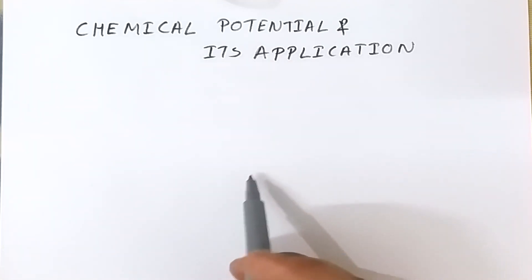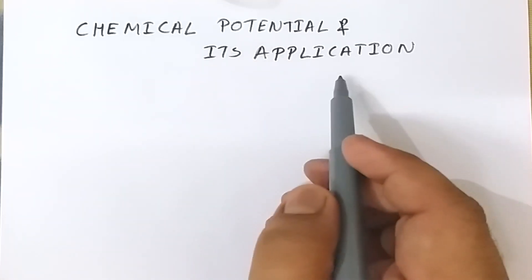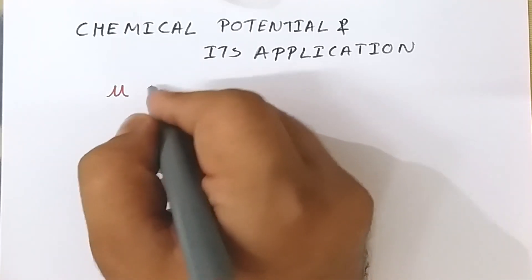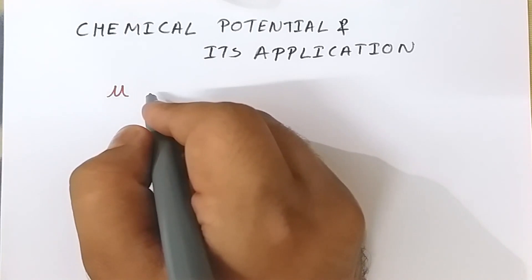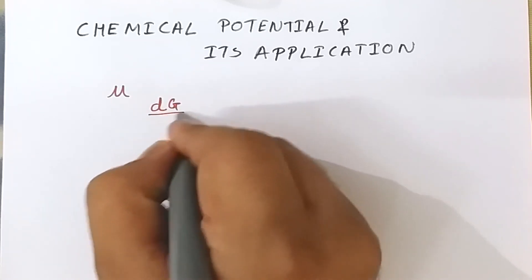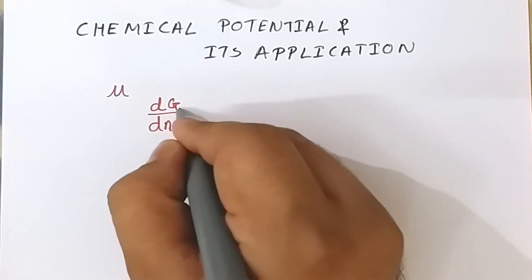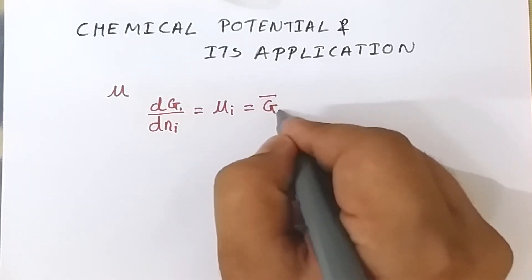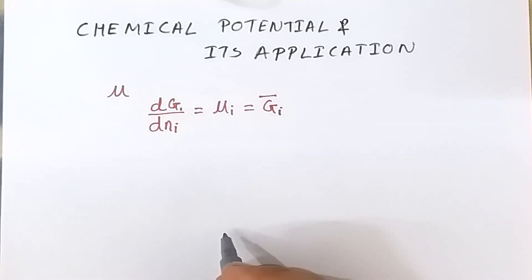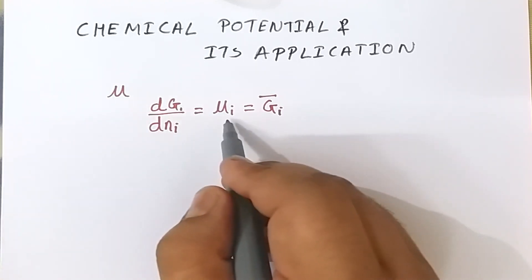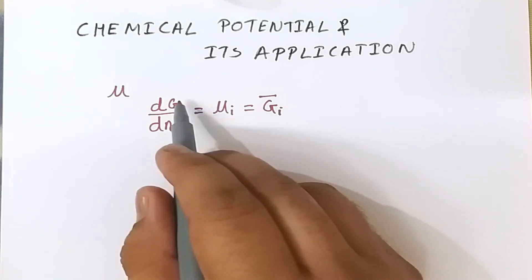Welcome. Today we are going to discuss chemical potential and its application. Chemical potential is written as μ (mu) or it is also known as partial molar Gibbs free energy. We can write it as dG/dnᵢ = μᵢ or ḡᵢ. The notation ḡ was given by Lewis and Randall, and μ was given by Gibbs.